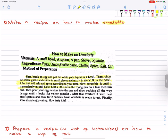Next, heat a little oil in the frying pan on a low medium heat. Then, pour your egg mixture into the pan and allow cooking all the way through until it looks like a pancake. After that, overturn it with spatula and cook for 2 minutes. Now, omelette is ready to eat. Finally, serve it and enjoy it. How tasty it is?